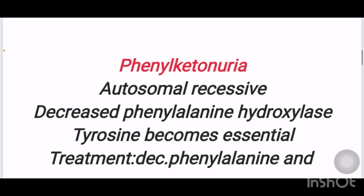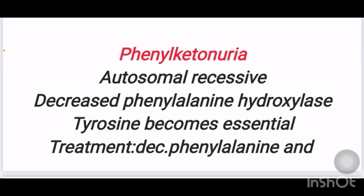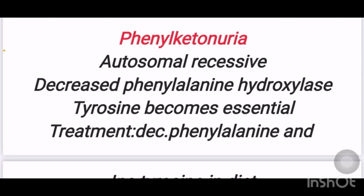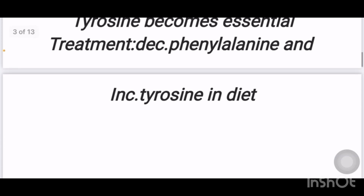Second scenario: a clinical history of intellectual disability, musty body odor, hypopigmented skin, and eczema. The diagnosis is phenylketonuria. It is an autosomal recessive disorder occurring due to decreased phenylalanine hydroxylase enzyme. Due to this deficiency, tyrosine production is reduced, so tyrosine becomes essential. Treatment involves decreased phenylalanine and increased tyrosine in the diet.